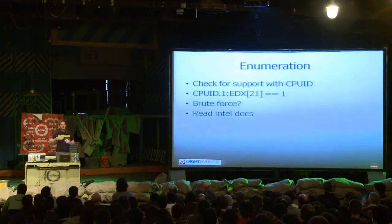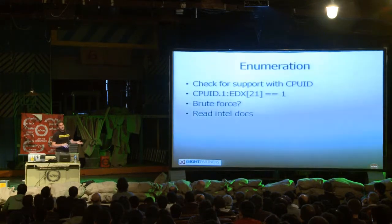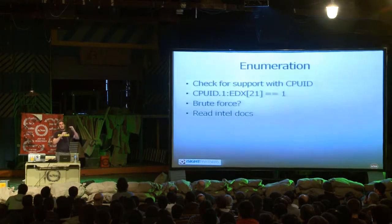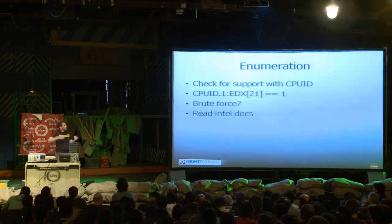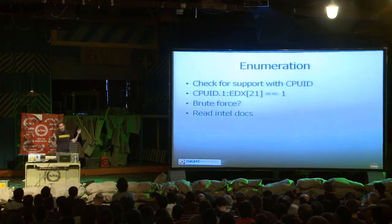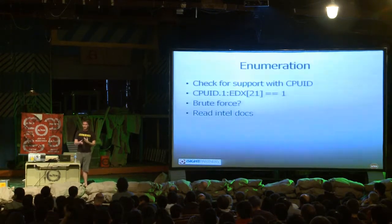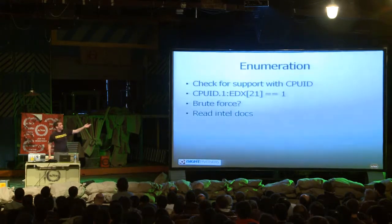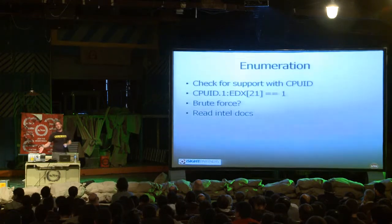There are a ton of MSRs — a ton of features to turn on and off and play with. Intel has loads of documentation describing the MSRs they use in their instruction sets. AMD, not so much. Intel doesn't always explicitly say here's all the MSRs and their address space. So a lot of people have done work just brute-forcing — trying to read and write every single value. You can also call the CPUID instruction, which will write values into registers and let you check which MSRs are available.